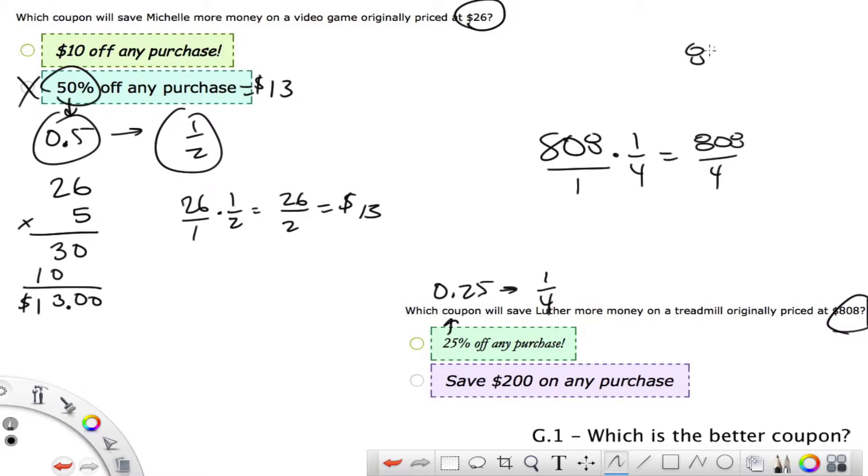Now it's a division problem. Using short division, 4 goes into 8, 2 times with nothing left over. 4 goes into 0, 0 times with nothing left over. So 4 goes into 8, 2 times. So sure enough, this is going to save us $202 compared with $200. So this is your better purchase.